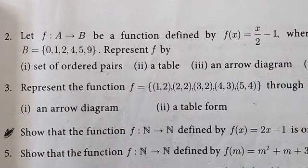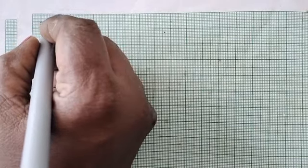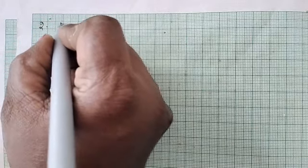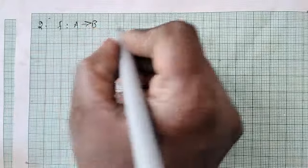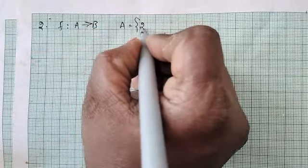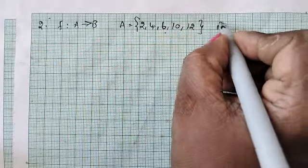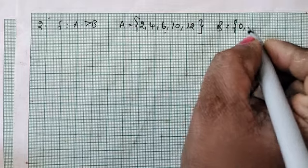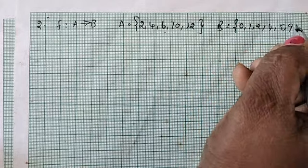an arrow diagram, and a graph. Given what is given: f is a function from A to B, and then A equal to 2, 4, 6, 10, 12, and B equal to 0, 1, 2, 4, 5, 9.